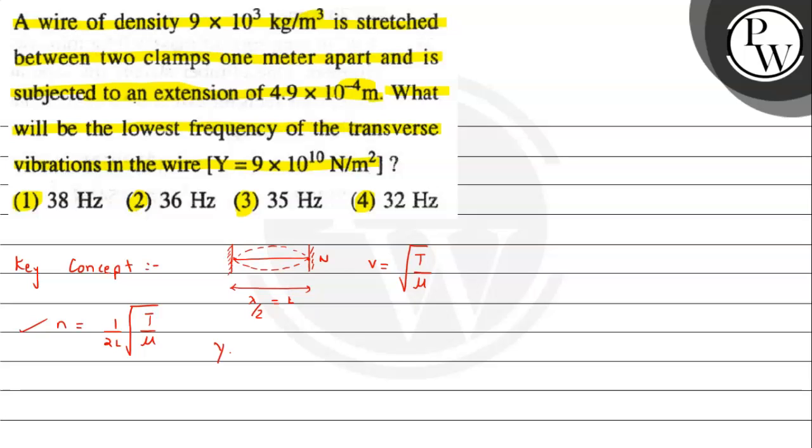If we talk about Young's modulus, it is the ratio of longitudinal stress to longitudinal strain. Longitudinal stress is tension per unit area, and strain is the change in length upon original length. The change in length upon original length, that means this will be the case.